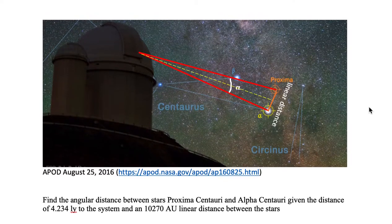Let's say we want to find the angular distance between the stars, Proxima Centauri and Alpha Centauri, given the distance, this yellow dashed line, of 4.234 light-years to the system, and a separation or linear distance of 10270 astronomical units between the stars.